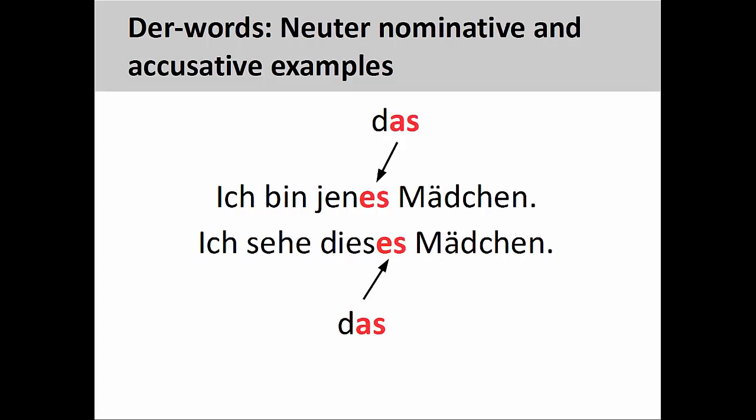Now on to the neuter forms. In the first sentence here, ich bin jenes Mädchen (I am that girl), you can see that the -es ending on jen- is close to the neuter definite article in the nominative case, but does not fully resemble it. In the sentence right below, ich sehe dieses Mädchen (I see this girl), the -es ending on dies- is close to the neuter definite article in the accusative case. You'll recall that neuter definite articles in both nominative and accusative cases end in -as, whereas der-words have an -es ending.